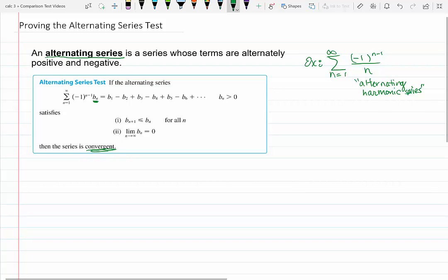So if it's true that the terms of the sequence are decreasing, so every term along B sub 4 is bigger than B sub 5, which is bigger than B sub 6, so that the overall value of each of these terms is shrinking, and it's shrinking to the point where the limit of the nth term is actually 0, then that's what determines that this series is convergent.